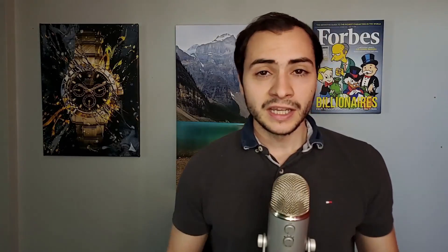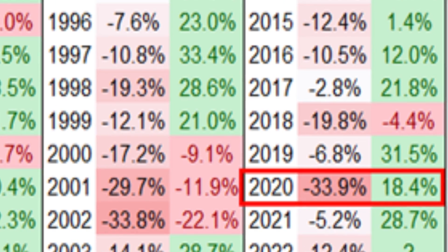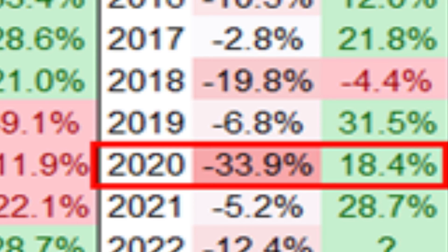As the legendary rapper YG said, scared money don't make no money. In 2020, the S&P 500 returned 18% but had a 33% drawdown, meaning at one point in time you would have been down 33%, which of course would have been during the pandemic. It had a great net return at the end of the year, but there was some risk associated with that.